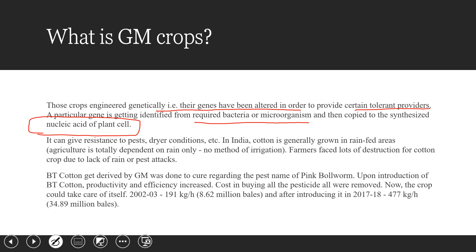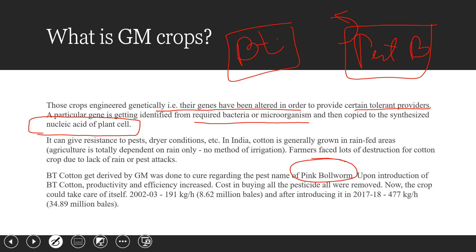When these crops are produced, they become resistant to particular pests and weather conditions. In India, BT cotton is allowed as a GM crop. It was seen that BT cotton was attacked by the pink bollworm pest. After the introduction of BT cotton, production increased at a very high rate. But after a period of time, the pink bollworm evolved too, and now BT cotton has proven to be useless against it.